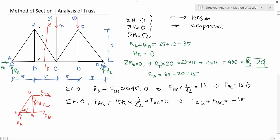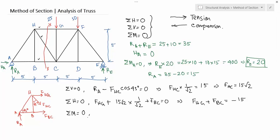We have one equilibrium equation left — the moment equation. To write the moment equation, you have to be careful about the point you choose: all unknown forces except one should pass through that point. If you take the moment about point H, you can see that FHC and FHG both pass through that point.